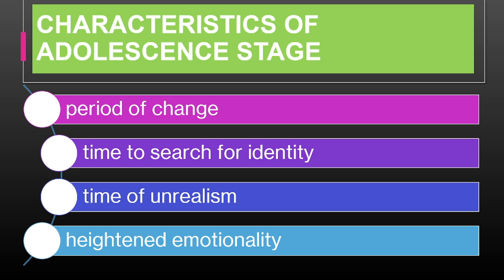By examining Romeo and Juliet, we can see how the story embodies the complexity of adolescence. The characters' experiences reflect the typical developmental challenges of this stage, including the search for identity, the influence of emotions, and the impact of idealistic thinking. In conclusion, understanding the stages of growth and development helps us appreciate the various changes individuals undergo throughout their lives. Each stage has unique characteristics and challenges that influence learning and behavior. By recognizing these developmental milestones, we can better support and guide individuals through their growth journey.